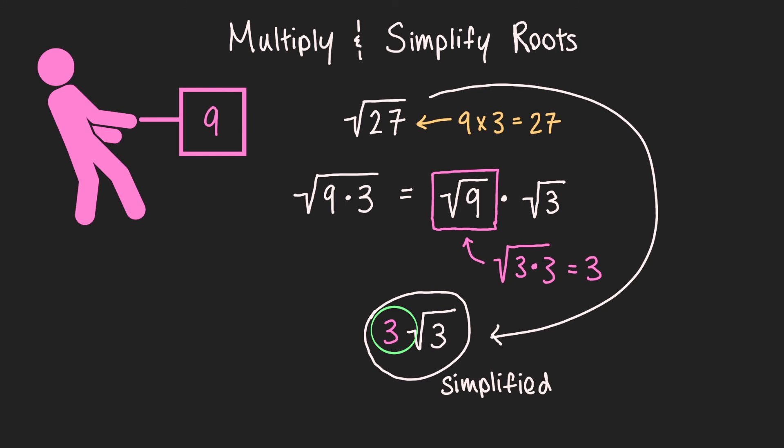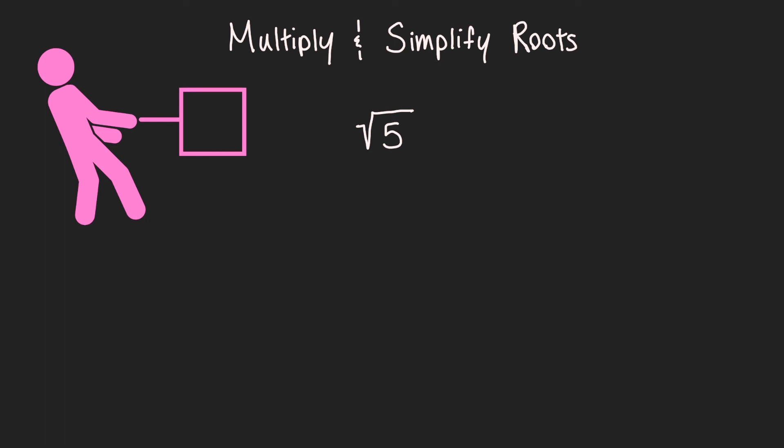And one thing you should know is that sometimes your root will already be simplified. If I ask you to simplify the square root of 5, there are no perfect squares we can pull out, so this root is already simplified.